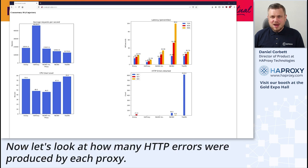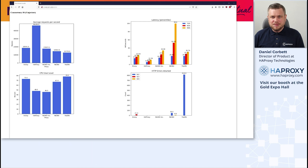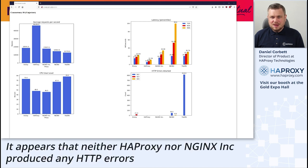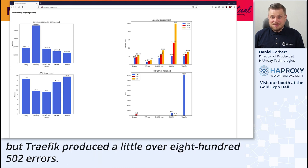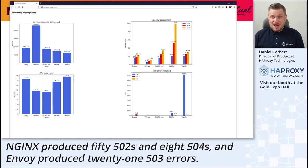Now let's look at how many HTTP errors were produced by each proxy. It appears that neither HAProxy nor NGINX Inc. produced any HTTP errors, but Traefik produced a little over 800 502 errors, NGINX produced 50 502s and 8 504s, and Envoy produced 21 503 errors.